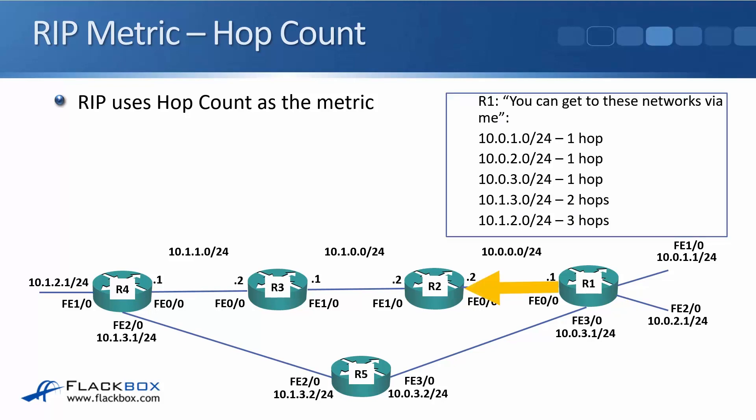R1 has formed an adjacency with R2 and will say: hey R2, you can get to these networks via me — 10.0.1.0/24 will cost you one hop, 10.0.2.0/24 and 10.0.3.0/24 are also one hop away, 10.1.3.0/24 is two hops away, and 10.1.2.0/24 is three hops away. The first three networks are all directly connected on R1, 10.1.3.0/24 is behind R5 from R1's point of view, and 10.1.2.0/24 is behind R4, so they are an additional one or two hops away.